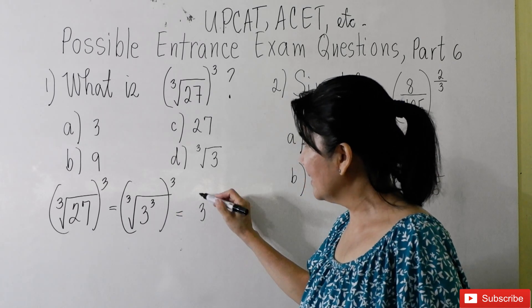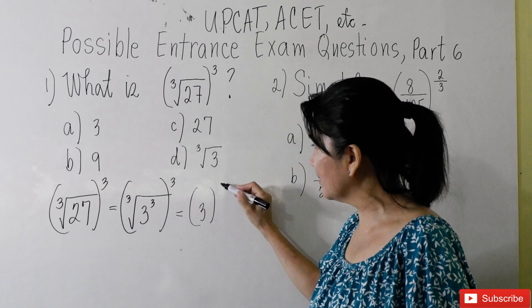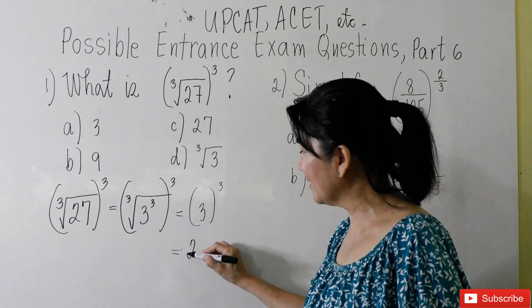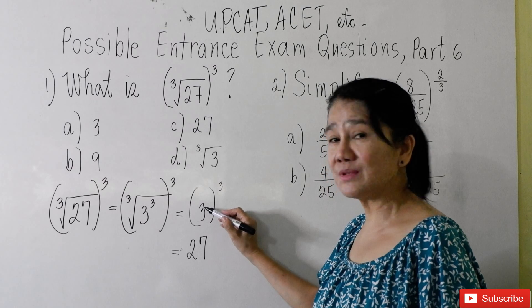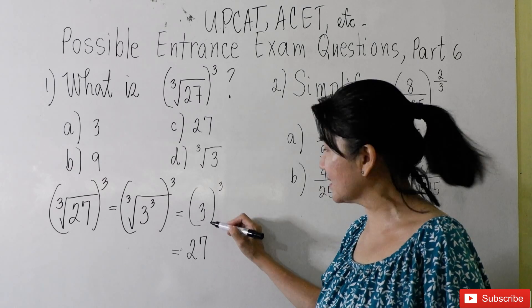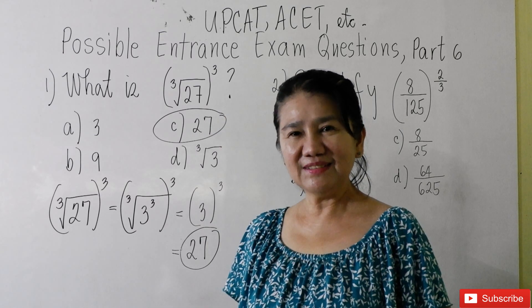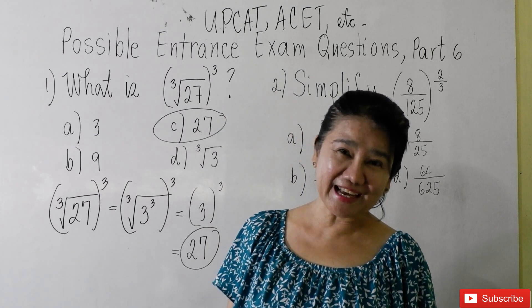Thereby, giving you what's the cube root of 3 cubed? It's three. And then you raise it to the third power. You will get 27. Three times three times three is 27. So the correct answer is letter C. Did you get the correct answer?